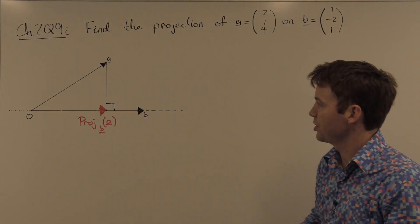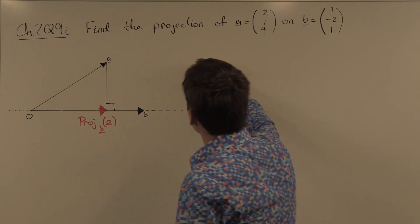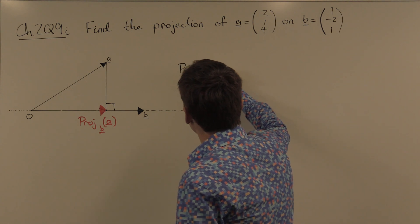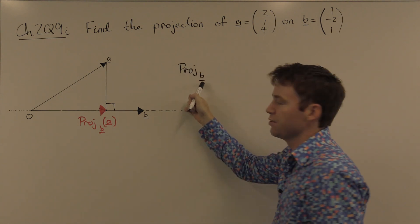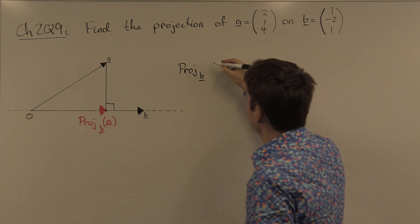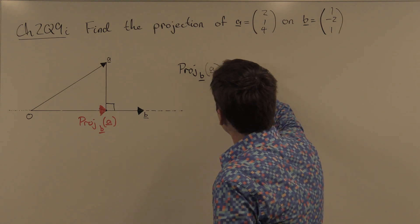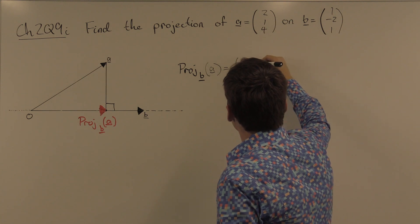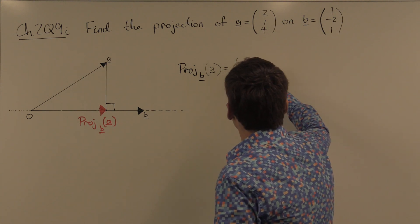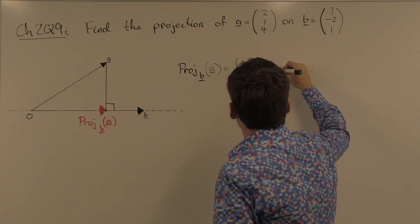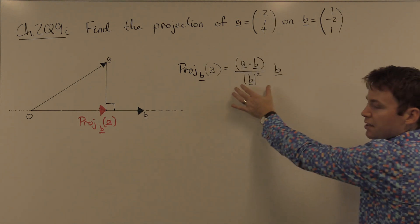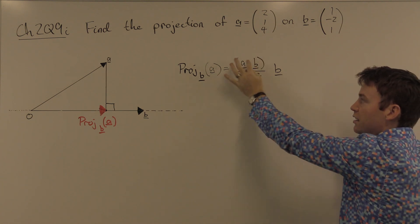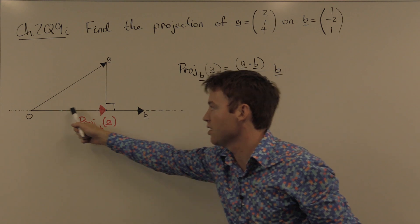You find the projection like this. The projection onto b, b is written slightly lower as a subscript, of a is equal to a dot b over length b squared times b. Notice that this is a scalar. It's some scalar times b. That means it's somewhere on this line.